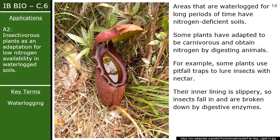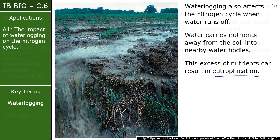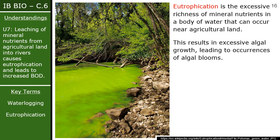Areas that have been waterlogged for a long time develop nitrogen-deficient soils. Some plants have adapted to become carnivorous, obtaining nitrogen by digesting animals — similar to how animals obtain nitrogen by eating plants or other animals. The Venus flytrap, for example, has evolved a different mechanism to obtain nitrogen rather than relying on a nitrogen-deficient environment.